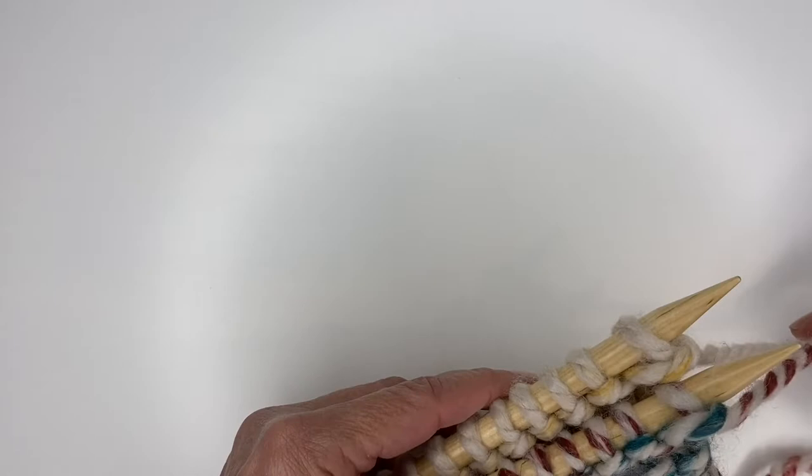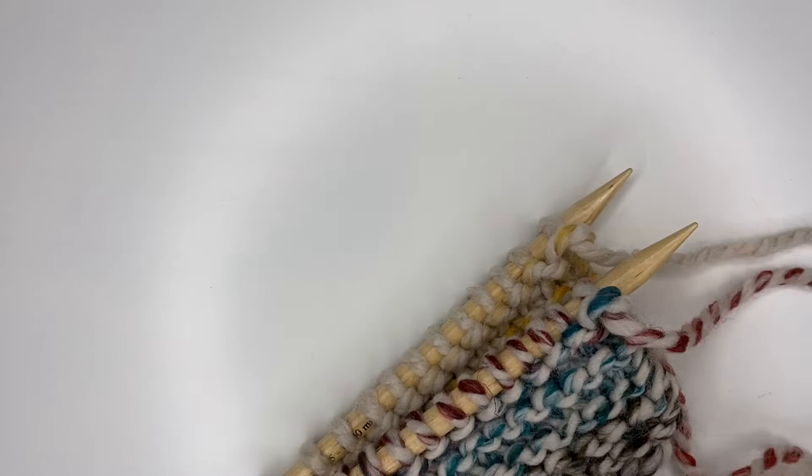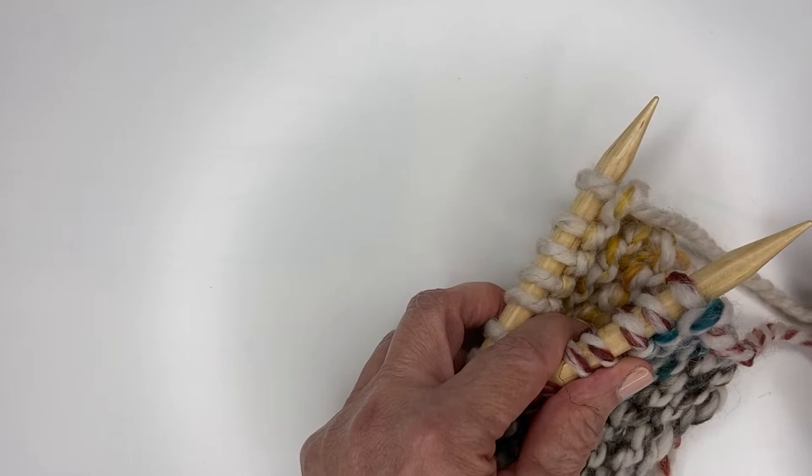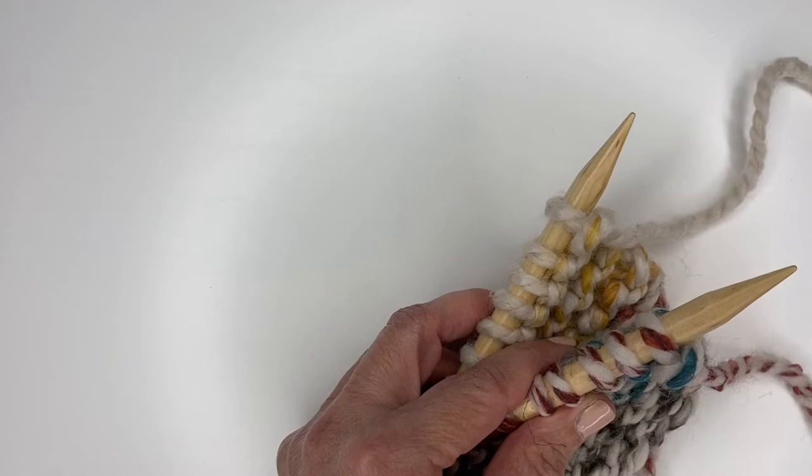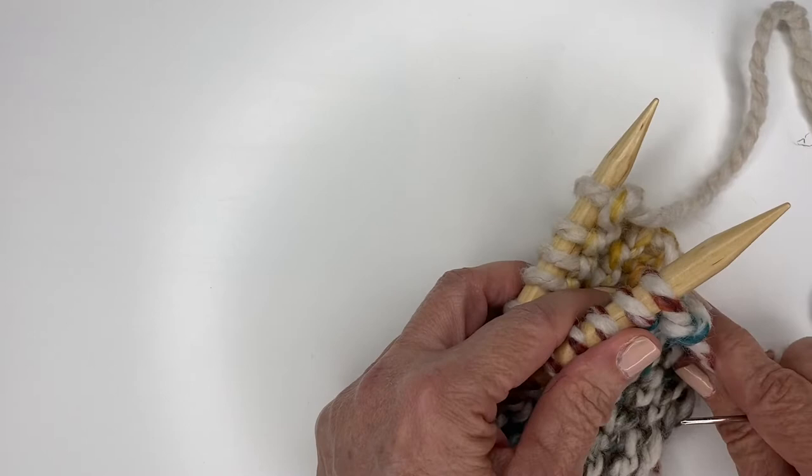I usually like to start with the back one, so let's thread that onto a darning needle and get started. To get started, we're going to do a setup row. We're going to start with the darning needle attached to the working yarn on the back needle - you've cut this and left it approximately three feet long. For the setup row on the front needle, you're going to...